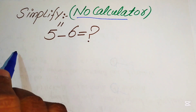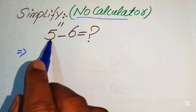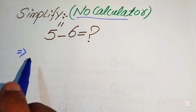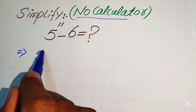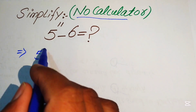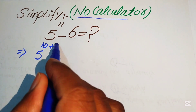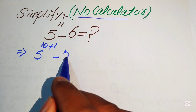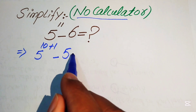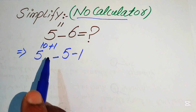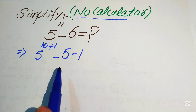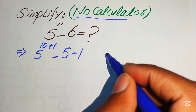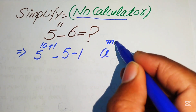First, we focus on the exponent of 5. The exponent is 11, and we write it as 10 plus 1. The other term is 6, and we write it as minus 5 minus 1, since minus 5 minus 1 equals minus 6.